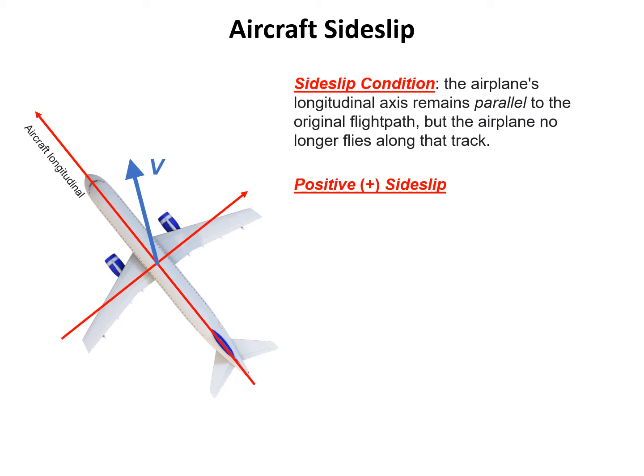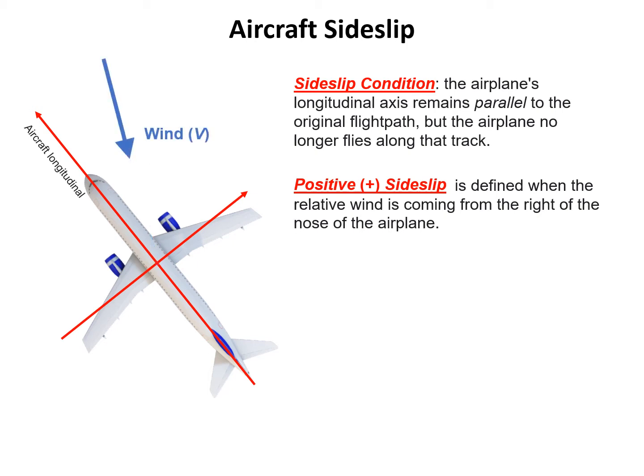The second task is to define positive sideslip. Positive sideslip is defined when the relative wind is coming from the right of the nose of the airplane. We're showing the absolute motion of the aircraft, which is vector V. If we see the relative wind, we need to change the vector. The wind vector is coming from the right of the nose of the airplane. This configuration determines positive sideslip.